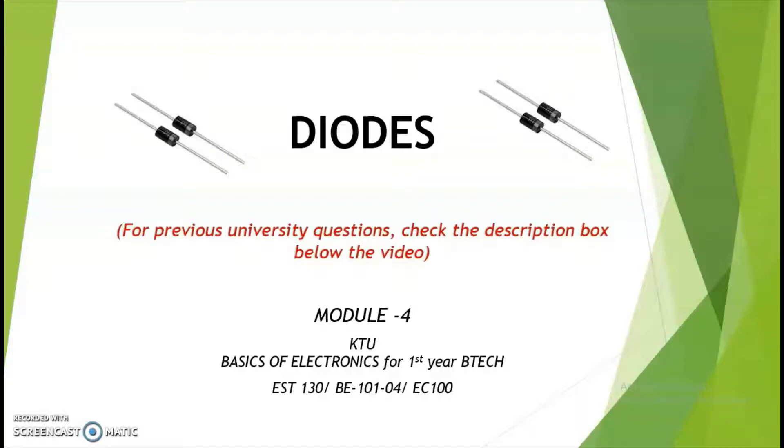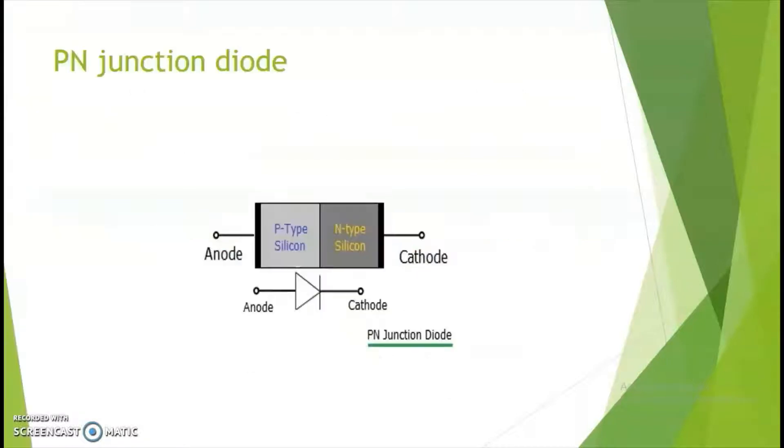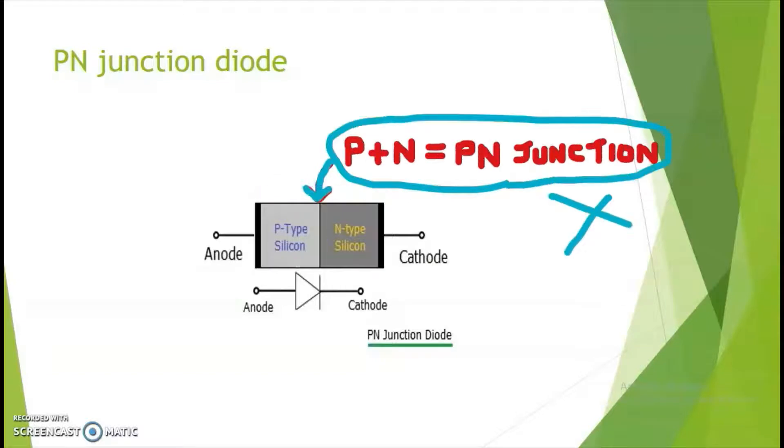In this video, we will be studying about diode, which is a semiconductor device and also active in nature. This is a P-N junction device. You would have seen in textbooks or probably heard that a P-type material and an N-type material are joined together to form a P-N junction. This is not true.